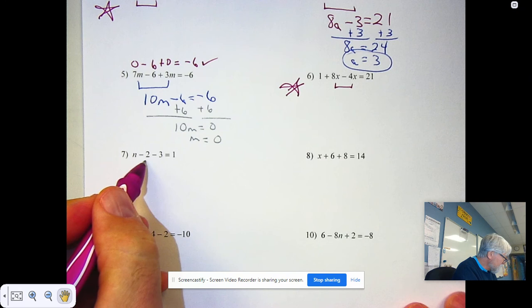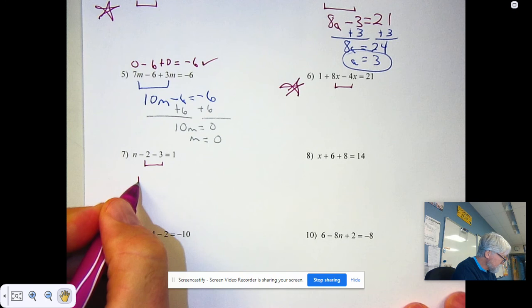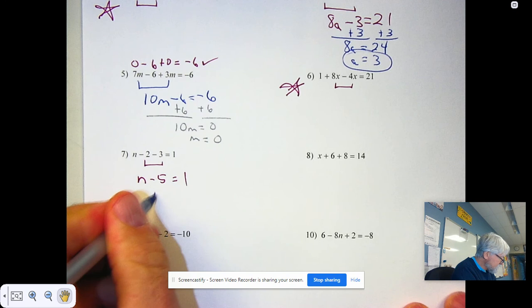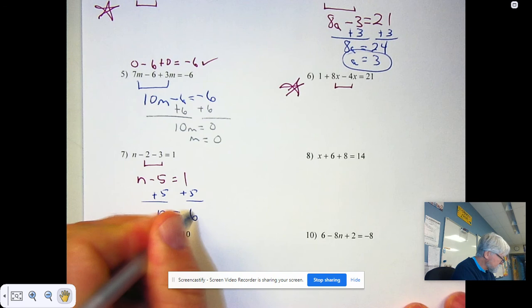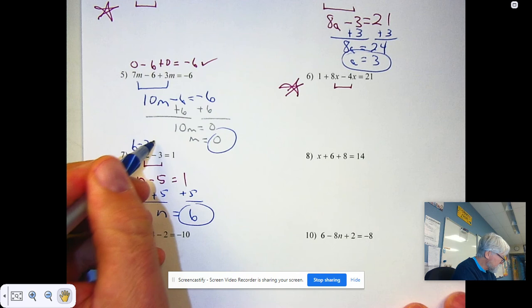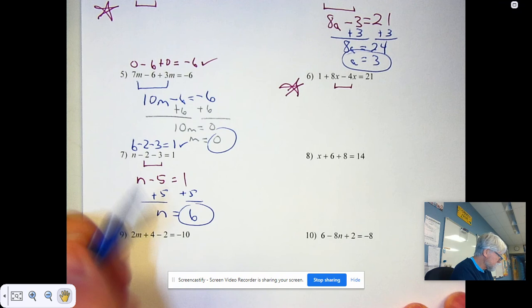Combining minus 2 with minus 3 gets us minus 5. And n minus 5 is 1. Add 5 to both sides. And I get an n of 6. So is 6 minus 2 minus 3 more? That's 4 minus 3. That is 1. It checks.